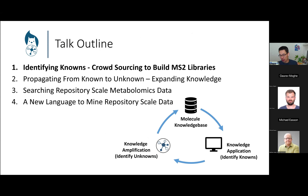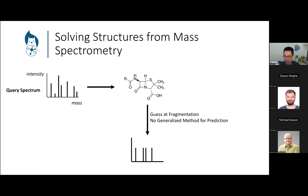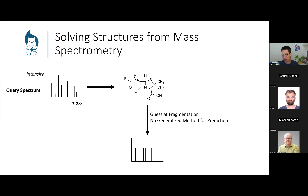This is generally the outline: identifying known compounds, propagating from unknown to unknown to expand knowledge, and taking advantage of public data to mine it in clever ways. Starting at the very top — identifying known molecules — given an unknown query spectrum from the mass spectrometer, within a few seconds we want to be able to turn that into a structure.